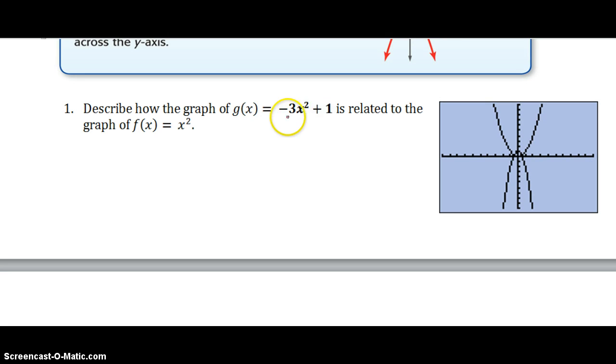So here we go. Number 1, we know it's a negative 3x squared. Now the negative 3, this tells us that it's reflected across the x-axis. The 3 tells us that it is stretched 3 units. And then the plus 1 tells us that it translates up 1 unit. So it's reflected because it's negative. It's stretched because a is greater than 1. And it translates because of the plus 1.